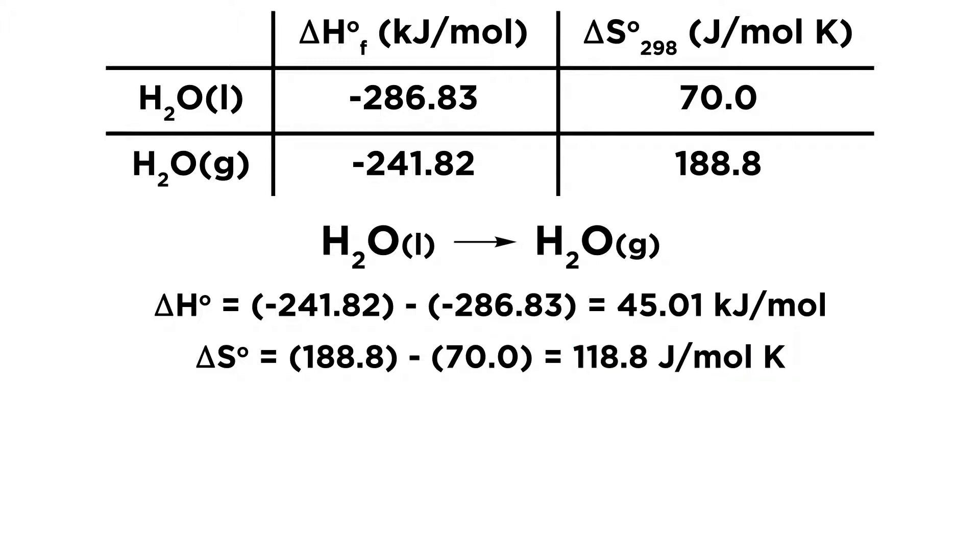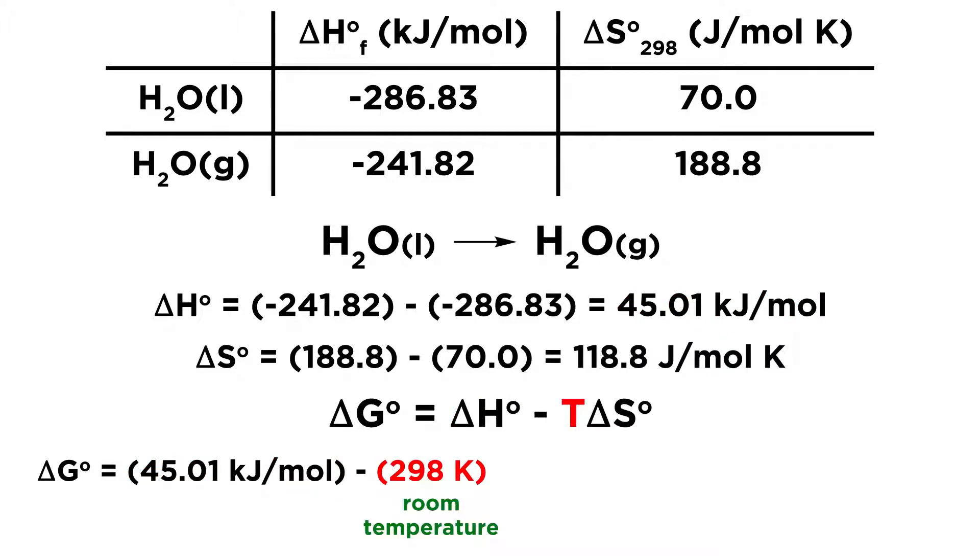So, now that we have enthalpy and entropy data, what are we going to do with that? Well, we know that the standard free energy change is going to be given by this expression. So, we have delta G equals delta H minus T delta S. And so, we now have all of this information. So, let's plug some things in. Delta G is going to be equal to delta H, which is 45.01 kilojoules per mole, minus T, which is going to be 298 Kelvin. Remember, we said this is done at room temperature, that's 298 Kelvin.